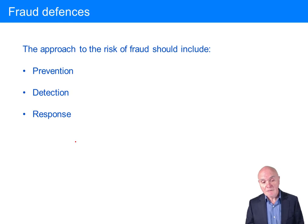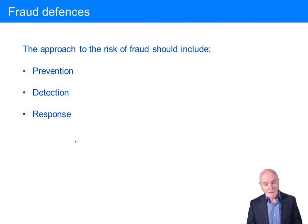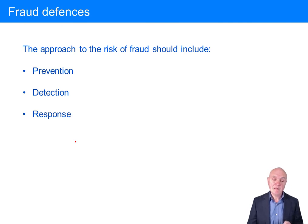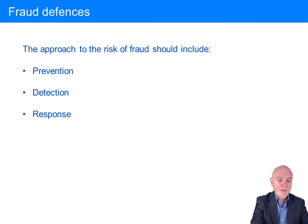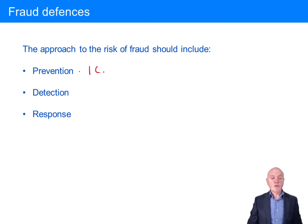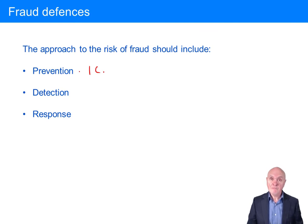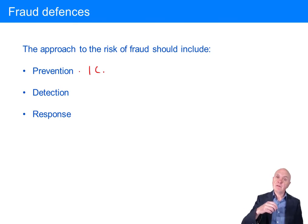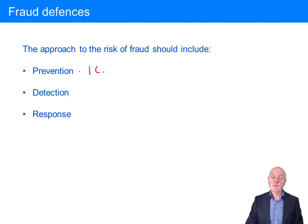Fraud defences are: prevention — stopping it happening in the first place. A good system of internal control can prevent fraud: locking cash away prevents theft of cash, locking inventory away prevents theft of inventory, requiring manager authorisation prevents people overstating their overtime.